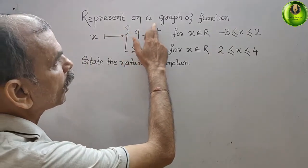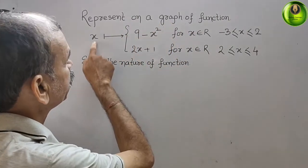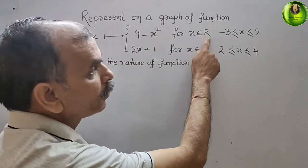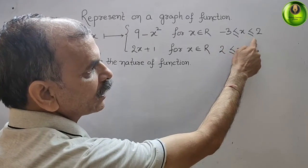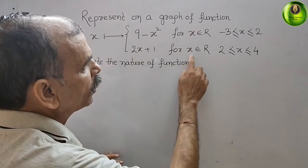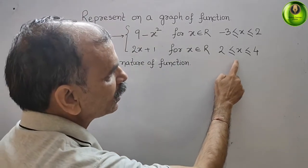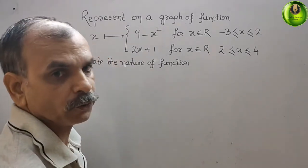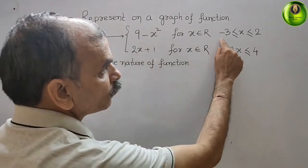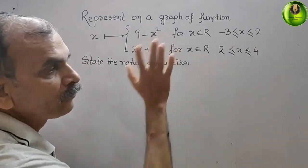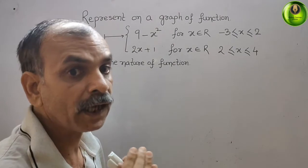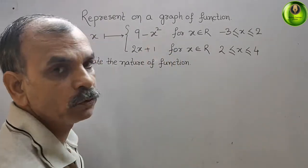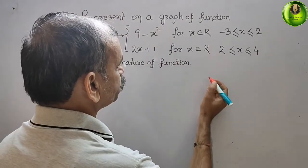The question is to represent a function on a graph. The function given is: f(x) = 9 minus x squared, for x belonging to real numbers where minus 3 is less than or equal to x less than or equal to 2, and the second function is 2x plus 1 for x belonging to real numbers where 2 is less than or equal to x less than or equal to 4. We also need to state the nature of the function. So whatever they have given for x are the domains, and the answers we get will be our range.